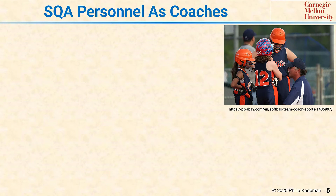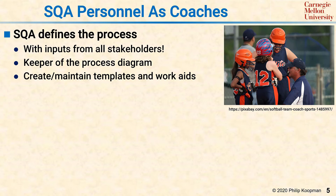While SQA is sometimes rather negatively seen as the process police, more effective SQA works more like a coaching system. SQA defines the process with inputs from the stakeholders — they're the keepers of the process diagram — but the process is not theirs to do with as they wish. Rather, it's a joint effort with all the stakeholders to define the right process for the company, and SQA is merely the keeper of the diagram. In support of this, SQA, again with input from stakeholders, creates and maintains templates and work aids to make it easier and less time-consuming to execute the defined process.